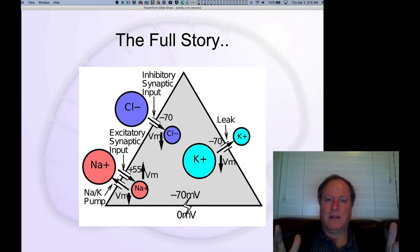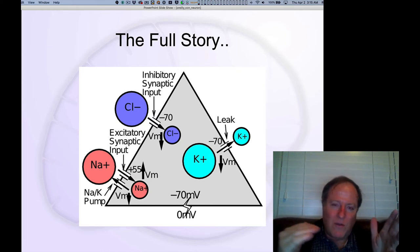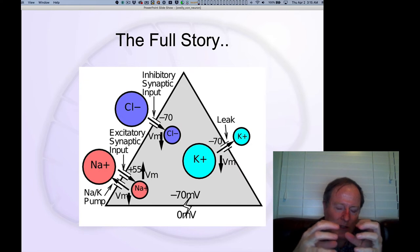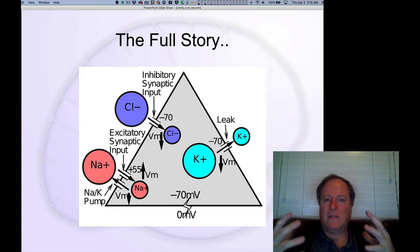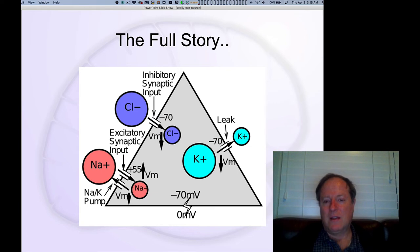So those potassium ions aren't sitting still. They want to get out because they don't like to be all concentrated and stuck together inside the cell. That is against this kind of diffusion force, this emergent force of diffusion. And so the amount of potassium that is inside is much less than it would be if there wasn't this diffusion force.